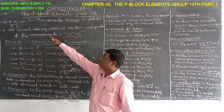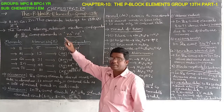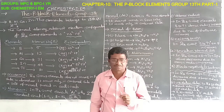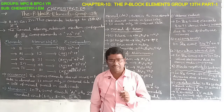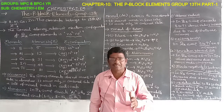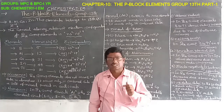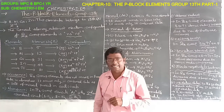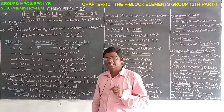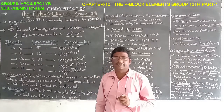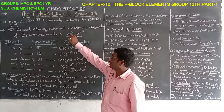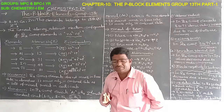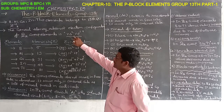The 3rd A group elements are boron, aluminium, gallium, indium, and thallium — these belong to the 3rd A group or 13th group elements present in the periodic table. By IUPAC notation, the general valence electron configuration of the 3rd A group elements is NS², NP¹.